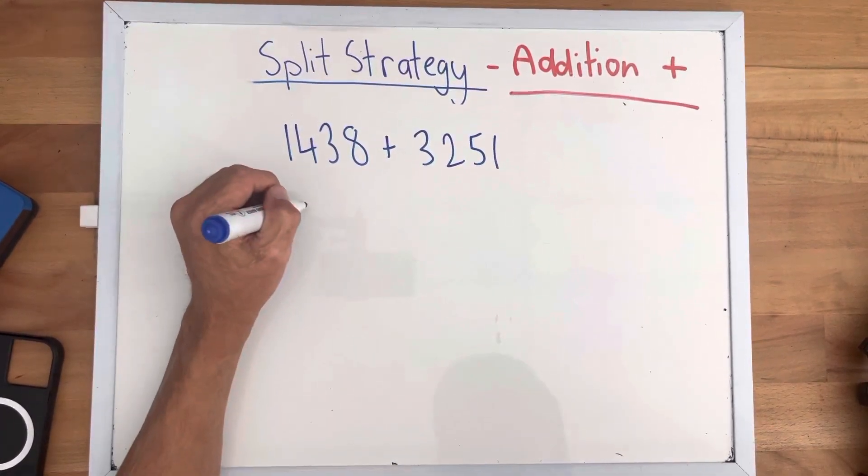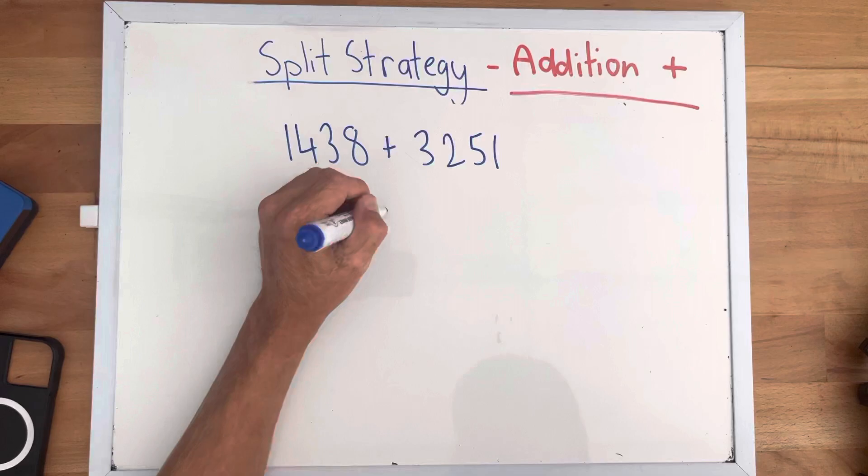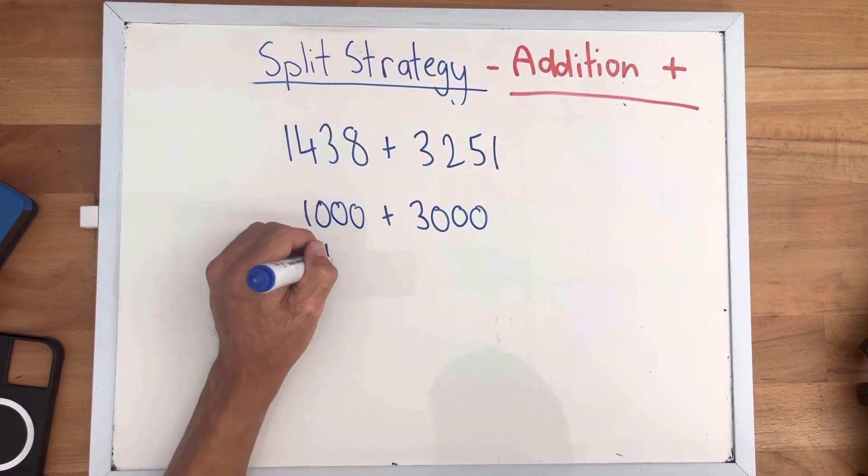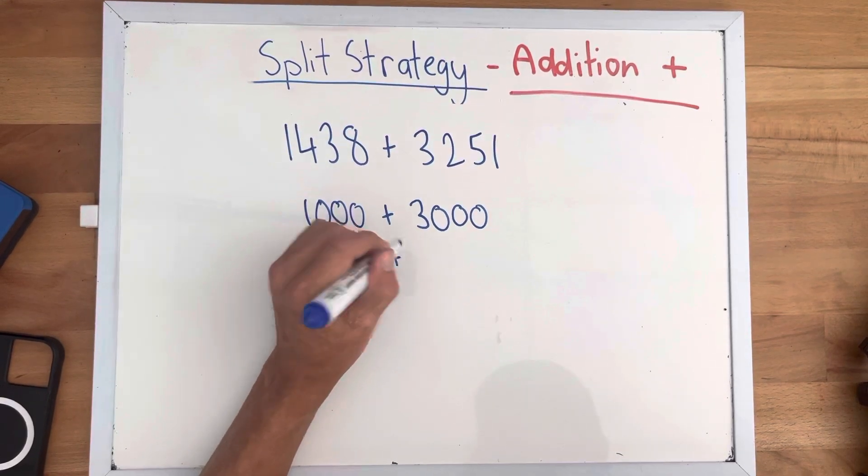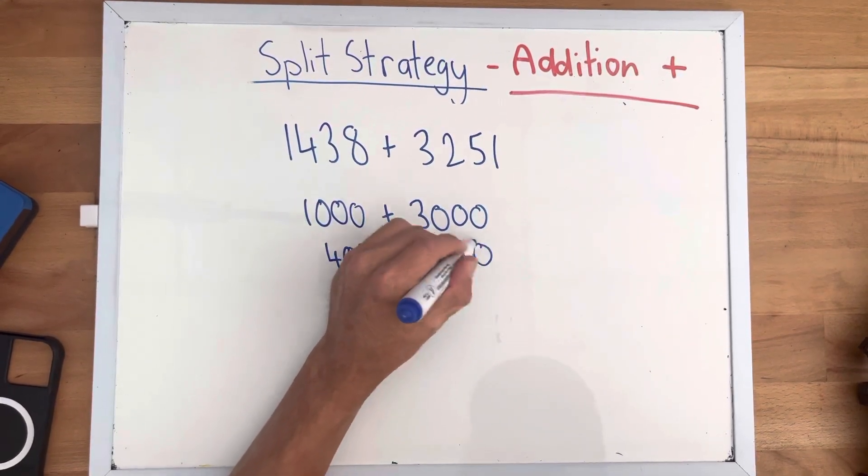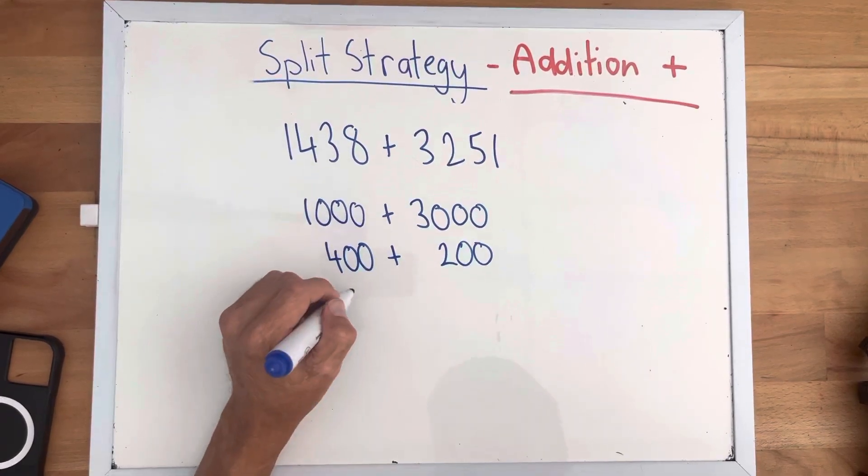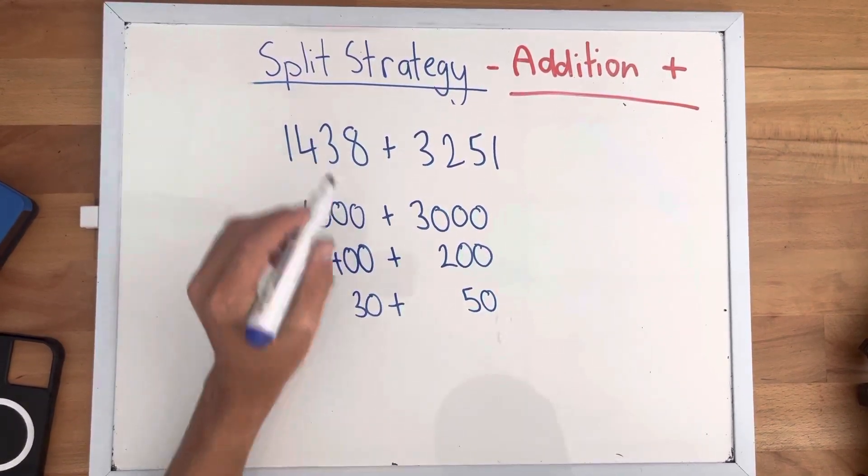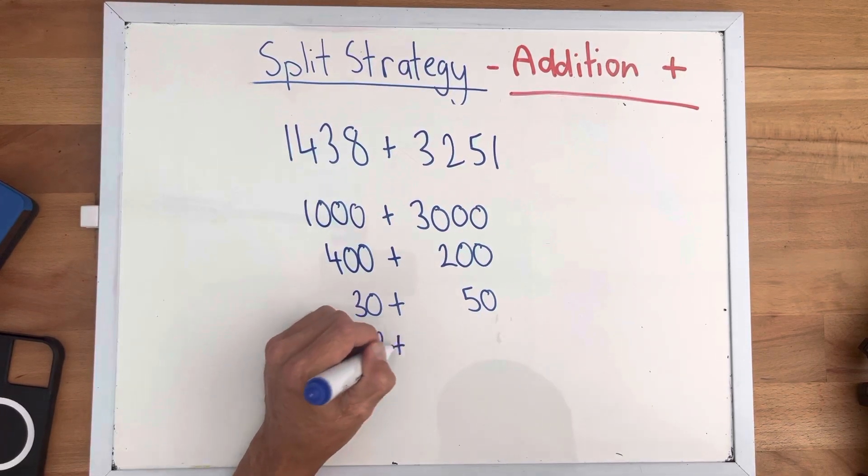Our thousands are 1,000 and 3,000. Our hundreds are 400 and 200. Our tens are 30 and 50. Our ones are 8 and 1.